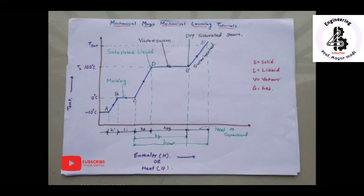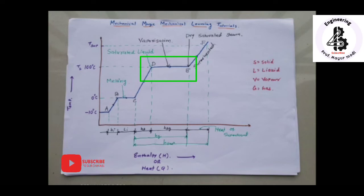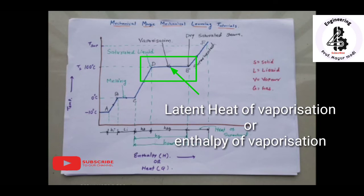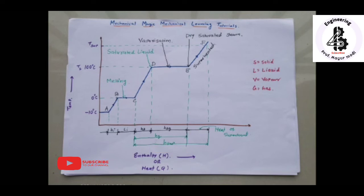In process D to E, on heating the saturated liquid, vaporization starts at constant temperature and we get a two-phase mixture of liquid plus vapor. The state of steam after complete evaporation of water at the saturation temperature is called dry saturated steam, while steam with water particles present is called wet steam. The heat energy required to vaporize saturated liquid into dry saturated steam is called the latent heat of vaporization, or enthalpy of evaporation, represented as h_fg. During this conversion, the specific volume increases.